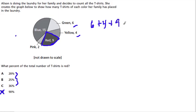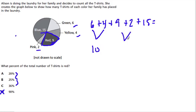9 red, 2 pink. Notice I underline these as I go so I don't lose track. Plus 15 — that's our total amount. 6 and 4 is 10. 9 and 2 is 11, and then we still have 15. So we have 10, 20, 30, 5... 36. So the total is 36.